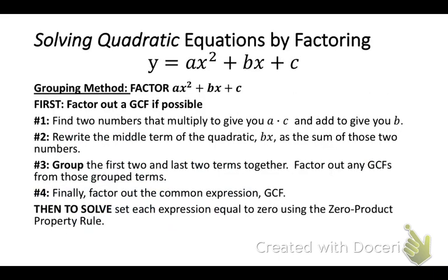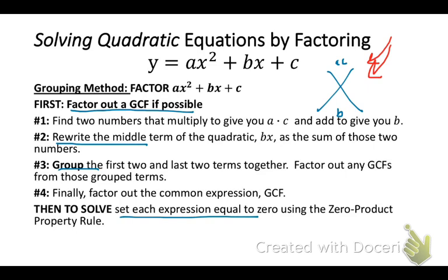Sometimes we can solve by factoring. First you want to factor out a GCF if possible. Then you're going to look for two numbers that multiply to give you a times c and add to give you b. I like to use this graphic organizer to put the numbers in. Then you're going to rewrite the middle term of the quadratic, bx, as the sum of those two numbers. Group the first two and the last two terms together and factor out a greatest common factor. Then factor out the greatest common expression. And finally set each of those expressions equal to 0 and solve if you're asked to solve.